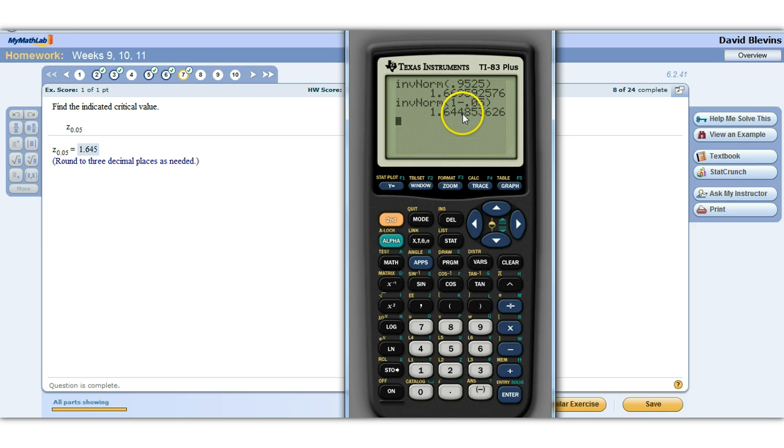There's the 1.6448. They want us to round it to three places, so 1.645, because that next number is 8. Or we could also have done that part in our head, the 1 minus 0.05, got the 0.95.